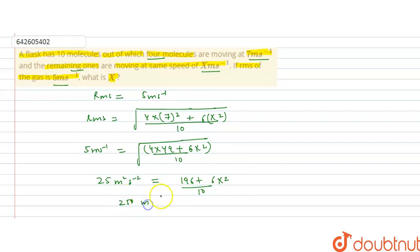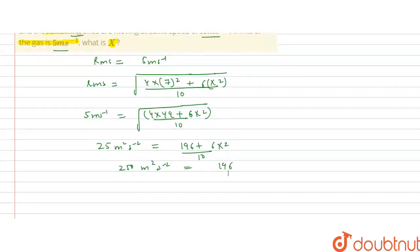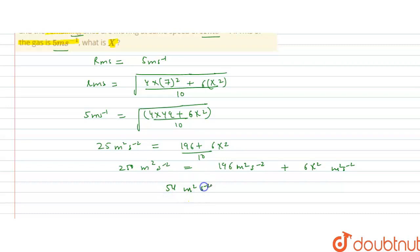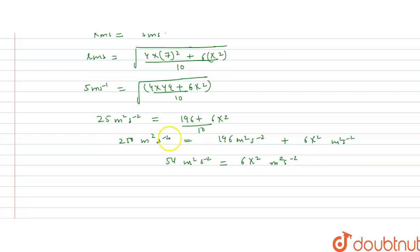So, 25 times 10 gives 250 meters squared per second squared, and this equals 196 plus 6x squared. The units of 7 are meters per second, so squaring gives meters squared per second squared. Therefore, 250 minus 196 equals 54, so 6x squared equals 54 meters squared per second squared, giving x squared equals 54 divided by 6, which is 9 meters squared per second squared.